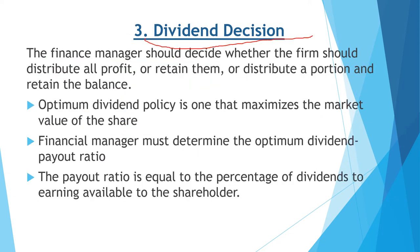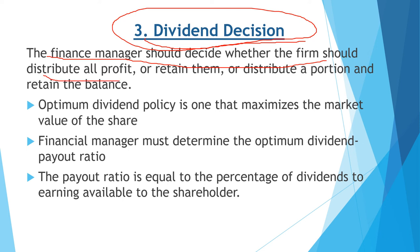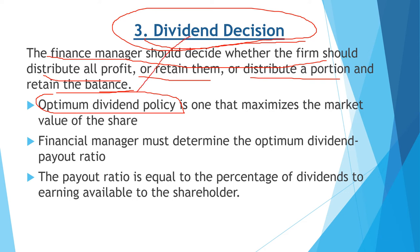Dividend decision is another important decision taken by a finance manager. The finance manager decides whether to distribute profit to shareholders, retain the profit, or distribute a portion and retain the balance. There is an optimum dividend policy that maximizes the market value of the share, and a direct relationship exists between the dividend decision and the optimum dividend policy.